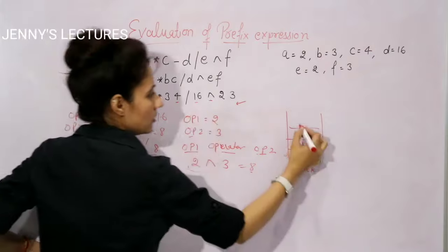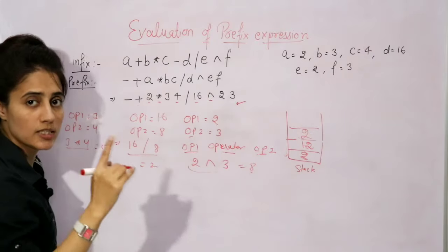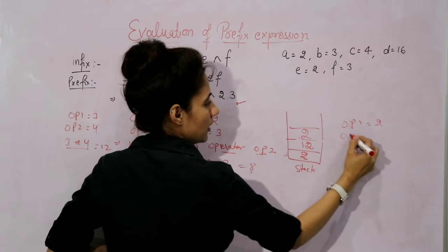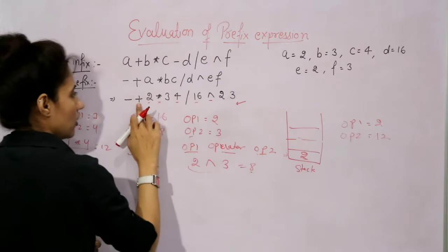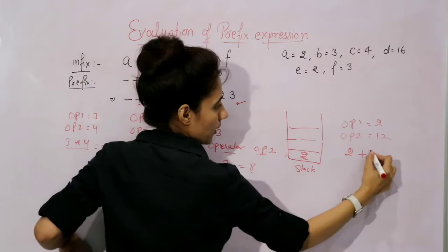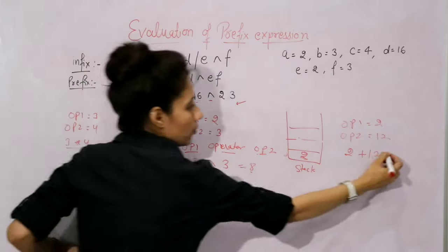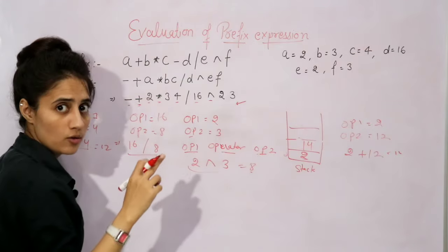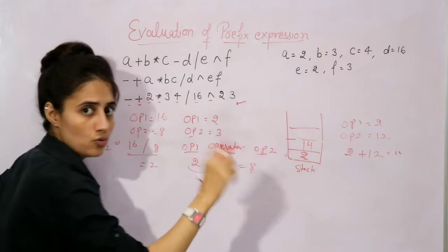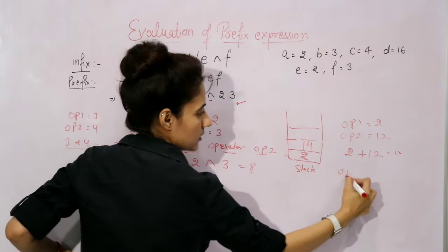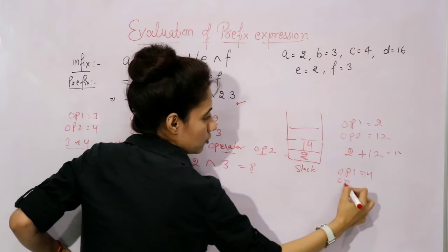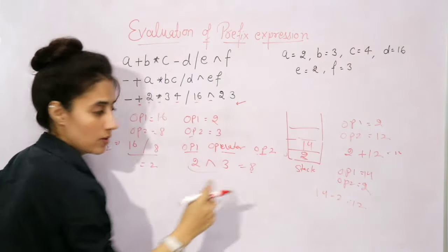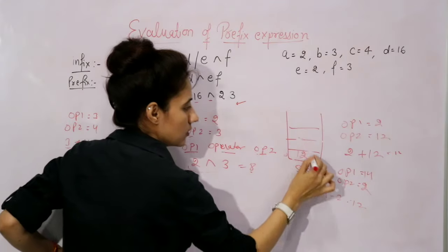After this we have two — this is an operand, simply push it into the stack. After this we have plus — this is an operator. Pop out two operands: first operand is two, second operand is twelve. Two plus twelve equals fourteen. Push this result fourteen into the stack. After this we have minus — also an operator. Pop out two operands: operand one is fourteen, operand two is two.